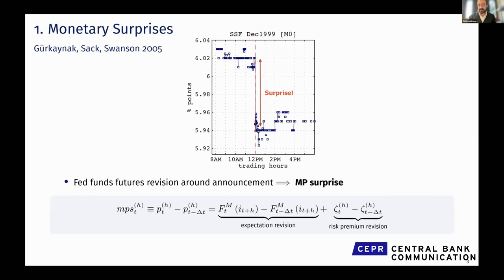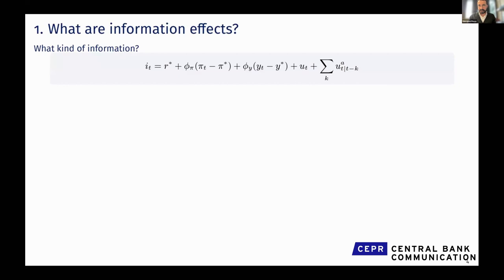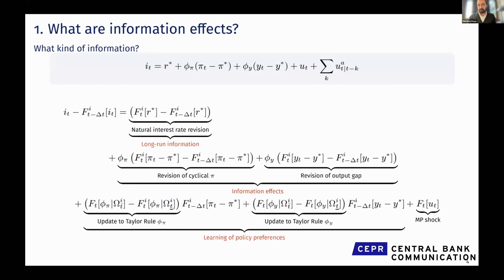A monetary policy surprise has two components: a change in expectations about interest rates or the path of rates, and a change in risk premium — two important bits. Anna, who we'll discuss later, has done great work on the second component. Now we might want to unpack what is in expectation revisions. Consider a simple Taylor rule with R-star, the equilibrium interest rate, a cyclical component, some forward guidance deviation, and the monetary policy shock.